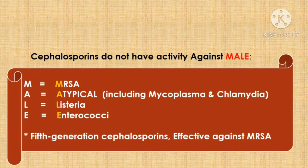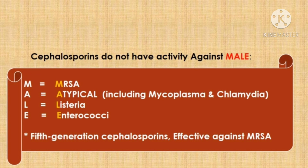After discussing various drugs in different generations, it is equally important to know the bacteria against which cephalosporins are not effective. The mnemonic for this is 'MALE', where M stands for MRSA, A stands for atypical bacteria like Mycoplasma and Chlamydia, L stands for Listeria, and E stands for Enterococci. Out of all generations, only the fifth generation cephalosporins are effective against MRSA — methicillin-resistant Staphylococcus aureus.